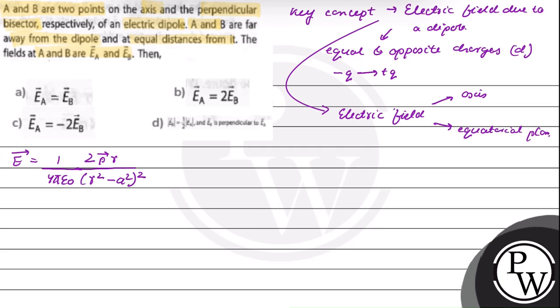The question says A and B are far away from the dipole, so R is very, very greater than a.